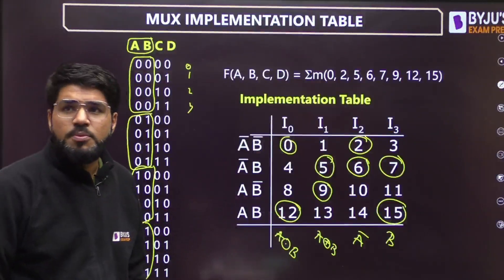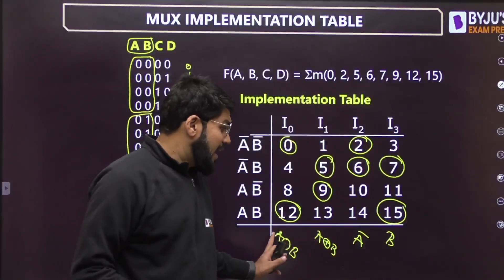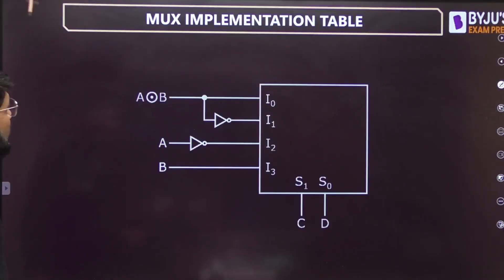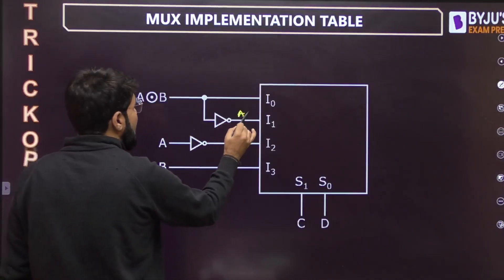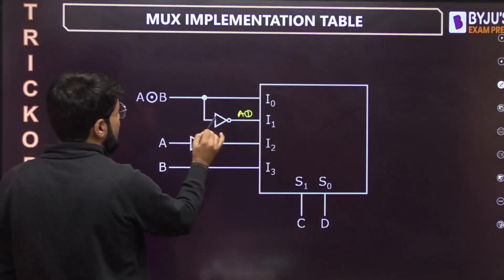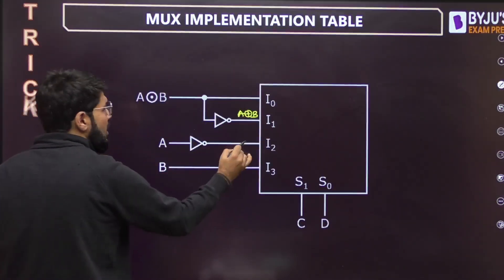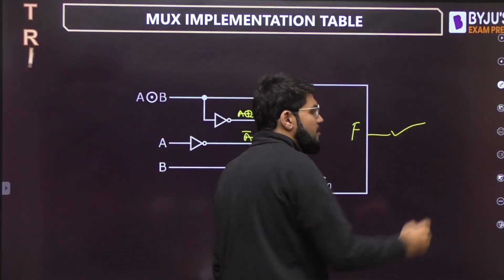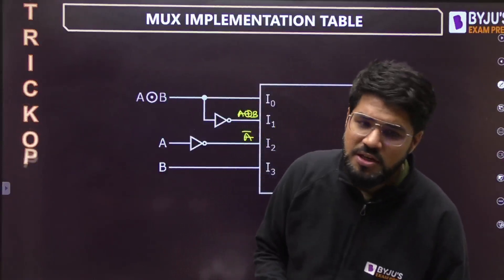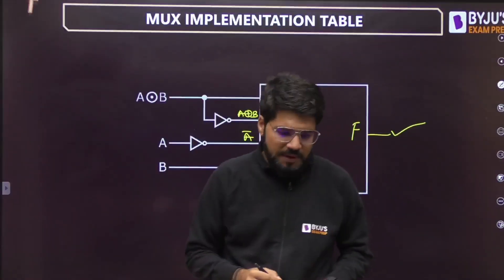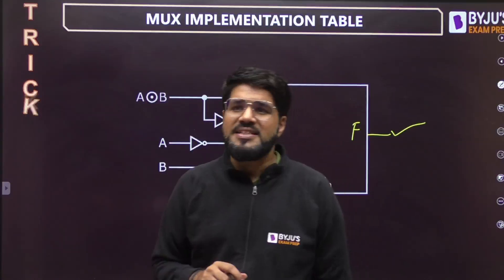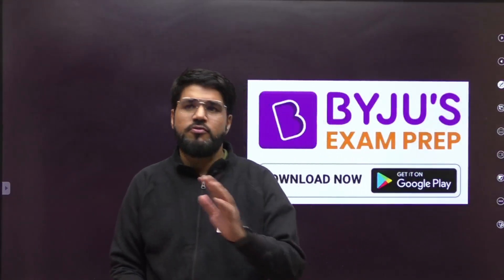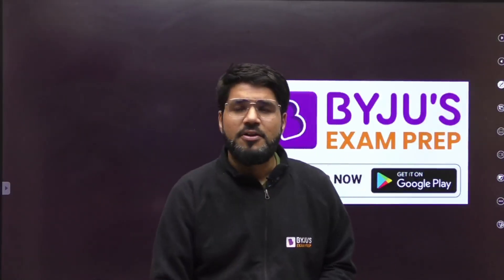Now we can draw the circuit diagram: A XNOR B, then A XOR B (complement of XNOR), then A-bar, then simply B. Have a look at the answer figure: first A XNOR B, then A XOR B, then A-bar, then B directly. This particular 4x1 MUX will implement the given Boolean function. So even a 4-variable function can be implemented using the implementation table technique. I hope you liked this trick — do follow our channel for more such tricks, thank you, stay safe.